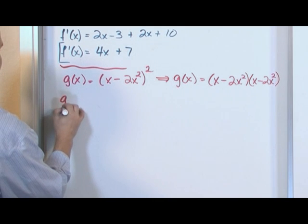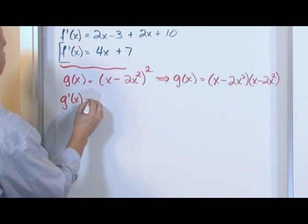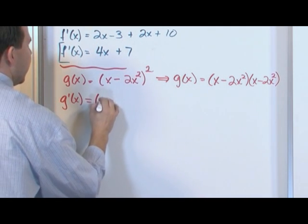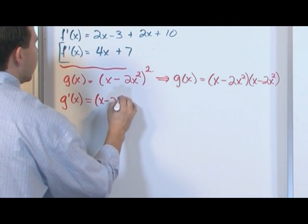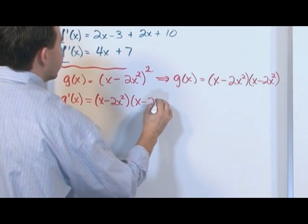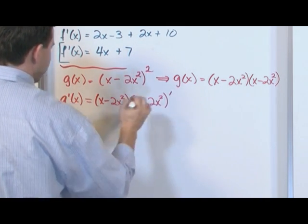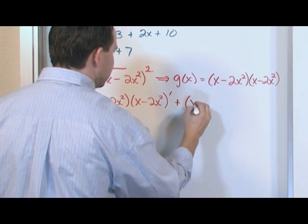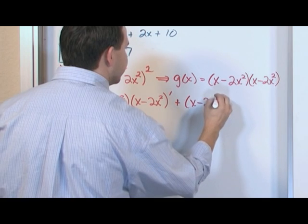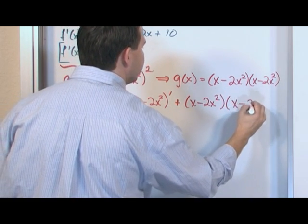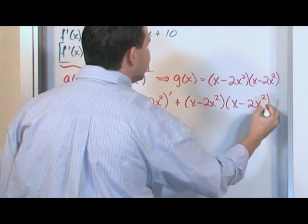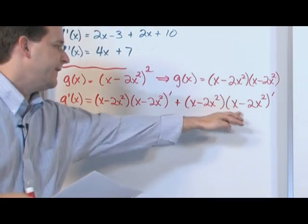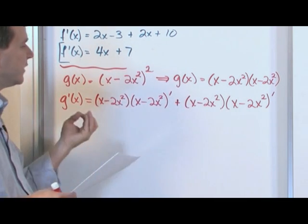So we can say g prime of x is equal to the first term times the derivative of the second. So we'll say x minus 2x squared, times the derivative of x minus 2x squared, plus the second term times the derivative of the first: x minus 2x squared times the derivative of x minus 2x squared. In this case it's a bit redundant because every term is really the same thing, but this is how you would methodically take this derivative.